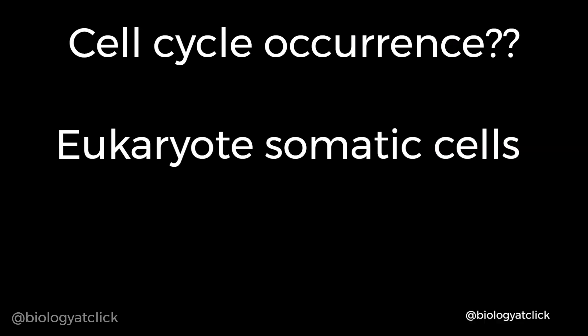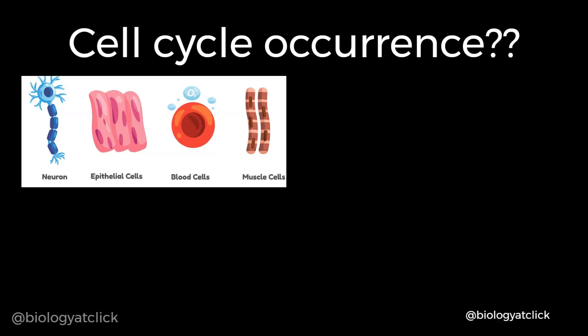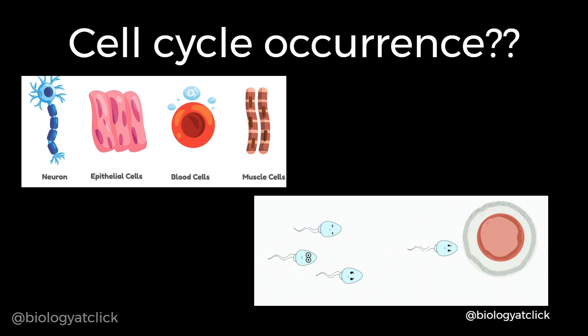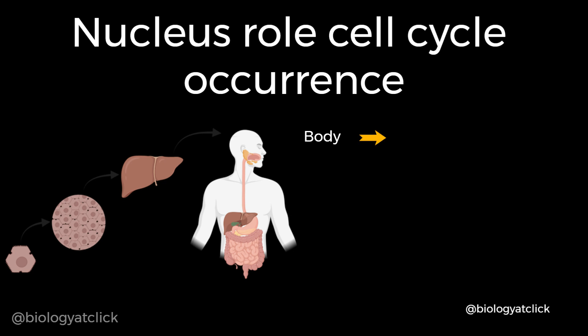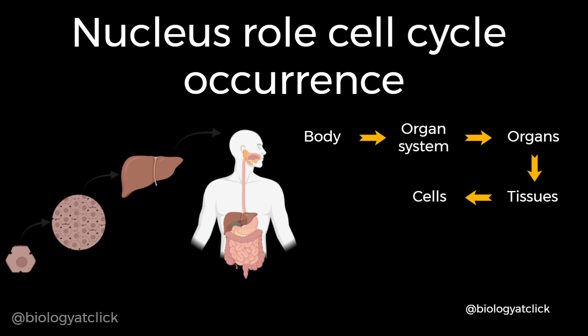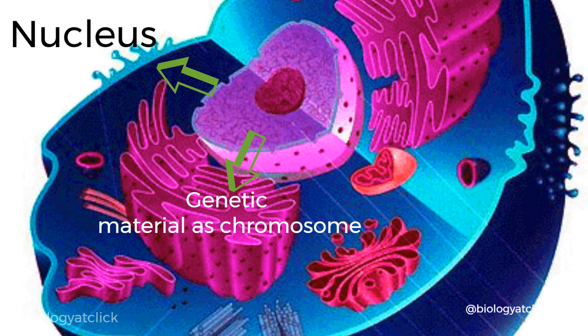The cell cycle occurs in eukaryotic somatic cells. Somatic cells are all the cells other than sperm and egg cells. The living body is made of many organ systems which in turn are comprised of many organs; organs are made up of many tissues; tissues are made of cells; and these cells are comprised of many cell organelles. The nucleus is one of the cell organelles where the process of cell cycle happens.